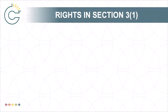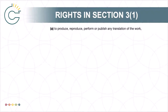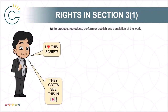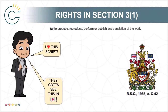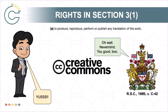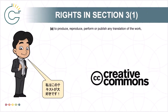Section 3.1 also includes a list of other sole rights of the copyright holder. The first of these, 3.1(a), is the right to produce, reproduce, perform, or publish any translation of the work. For example, if you love this script and you want to translate all of it into Japanese, your translation would probably be considered infringement if done without our permission. Of course, since we have applied a Creative Commons license to this script, you actually have our permission, subject to the terms of that license.